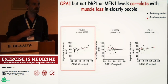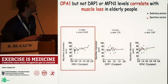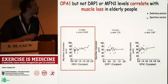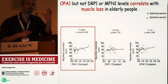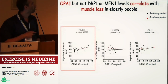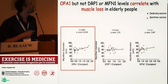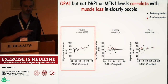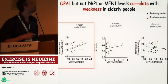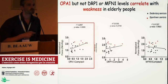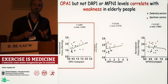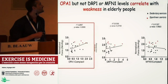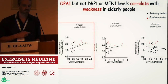Doing some correlations with the expression levels of these proteins with muscle mass — here we see myofiber diameter, so how big is the fiber — we see that actually OPA1, if it increases, also myofiber size tends to increase. The same is true for muscle force. So OPA1 is actually the best correlation with an increase in muscle force and in muscle mass.